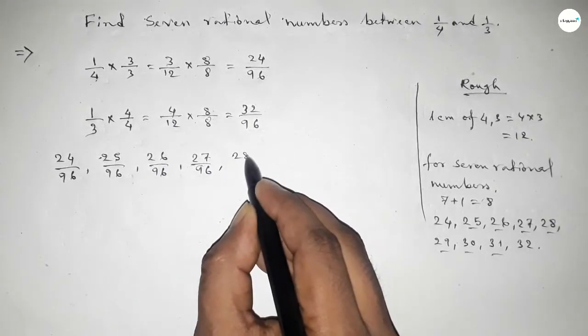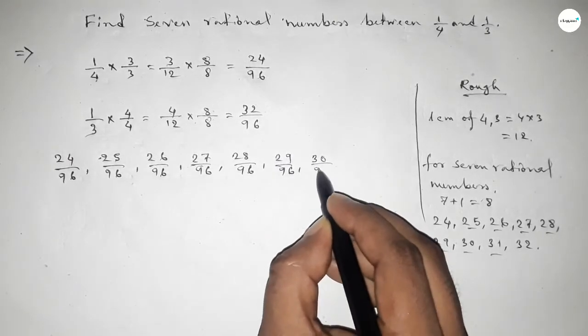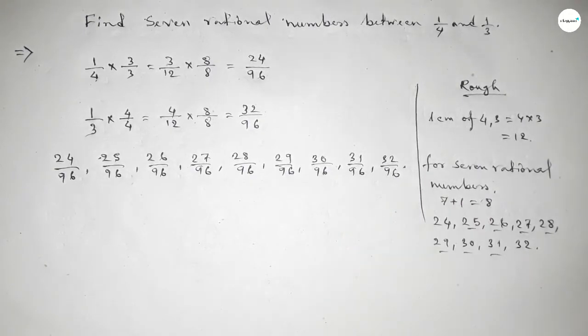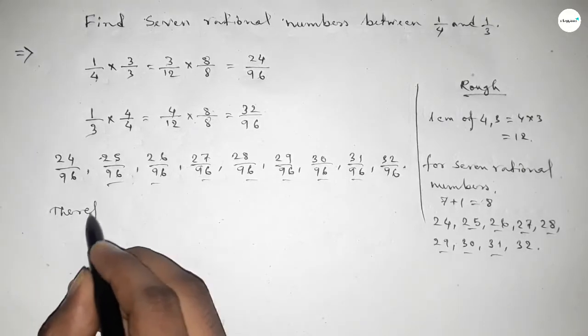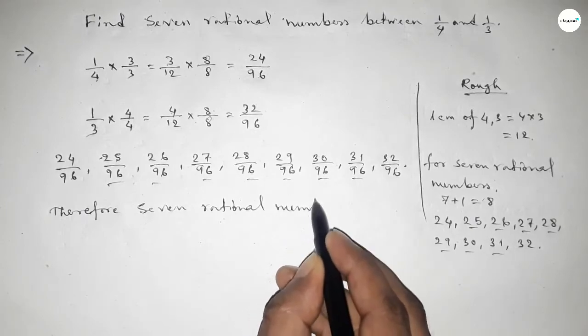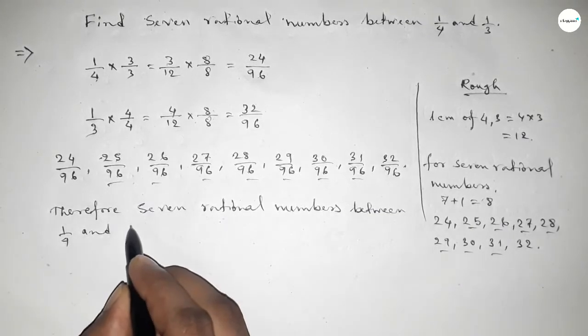Among these, these are the required 7 rational numbers between 1 over 4 and 1 over 3. Therefore, 7 rational numbers between 1 over 4 and 1 over 3 are first one 25 over 96.